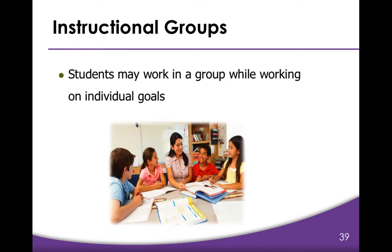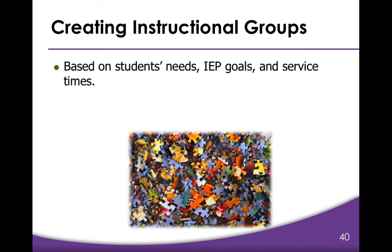Students may work in a group while working on individual goals. Many social skill goals, such as task completion or participation in class, are best taught and measured in group settings. A student with social skills goals may be in a group where other students are working on reading or math, for example. When figuring out how to put your students in groups that meet their individual needs, it's kind of like a 5,000-piece puzzle.